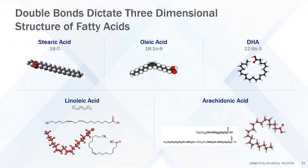Double bonds in the fatty acid chain cause a bend in the fatty acid molecule. Saturated fatty acids such as stearic acid are straight chains. Oleic acid with one double bond has a slight bend. Linoleic acid with two double bonds, arachidonic acid with four double bonds, and docosahexaenoic acid (DHA) with six double bonds have additional bends which cause the molecule to bend back upon itself and form circles.